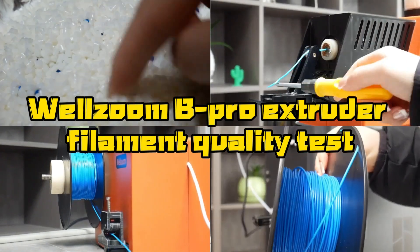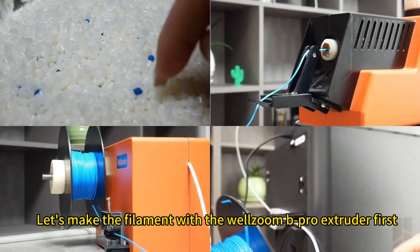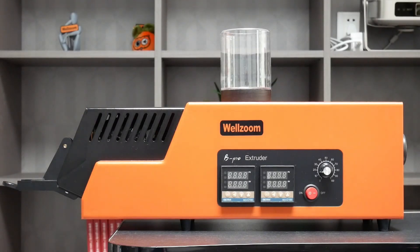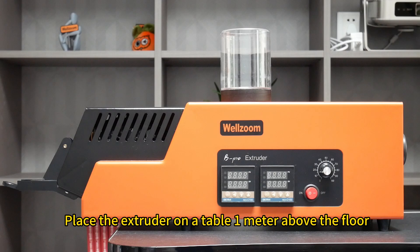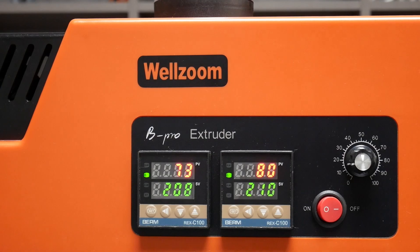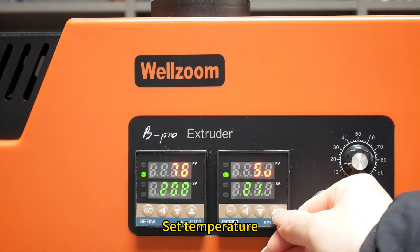Wellzoom B-Pro Extruder Filament Quality Test. Let's make the filament with the Wellzoom B-Pro Extruder first. Place the extruder on a table 1 meter above the floor and turn on the power. Set temperature.